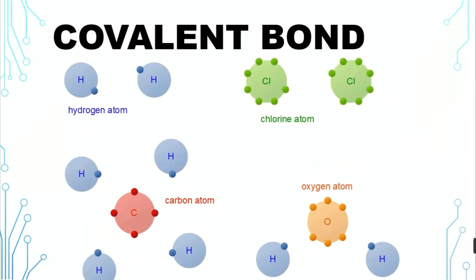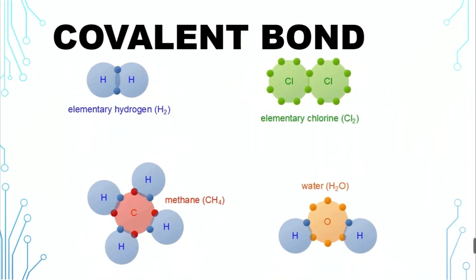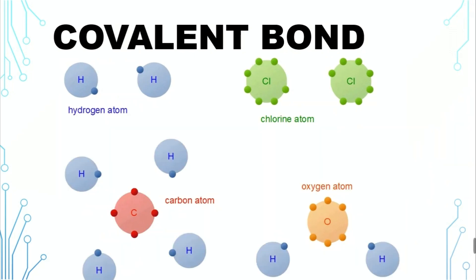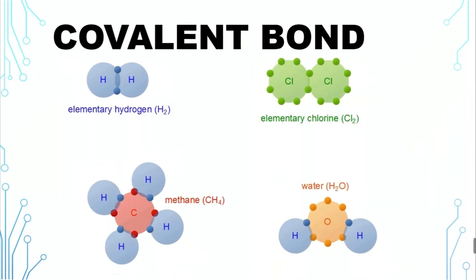However, pure ionic or pure covalent bonds barely exist. Almost all chemical bonds between two different atoms are actually having a certain portion of ionic feature and a certain portion of covalent feature.